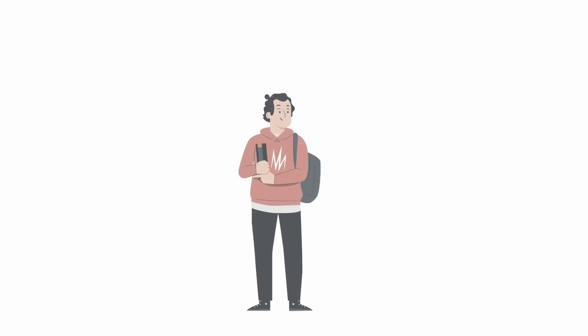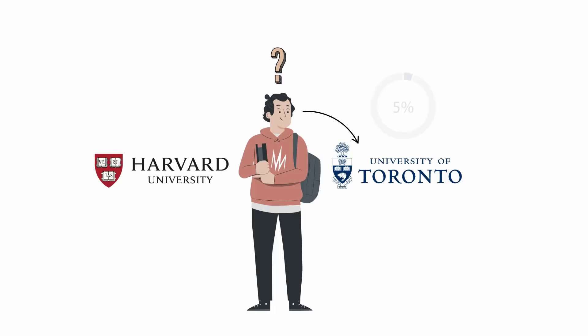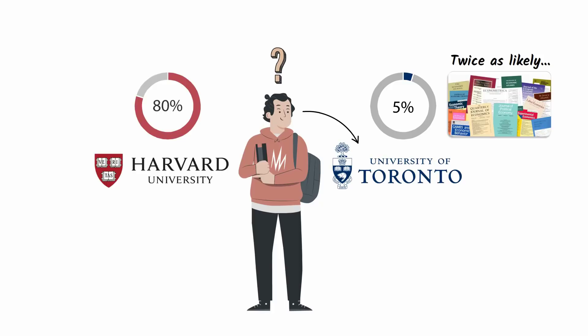If you were a promising young economic student, where would you go to graduate school? A great school like Harvard or a merely good school like the University of Toronto? If you're good enough to get into Harvard but choose to go to the University of Toronto and graduate in the top 5% of your class, you are twice as likely to get a paper published in a prestigious economic journal than 80% of Harvard graduates.